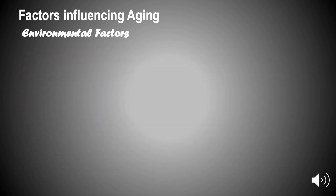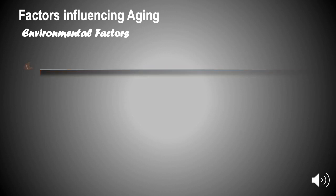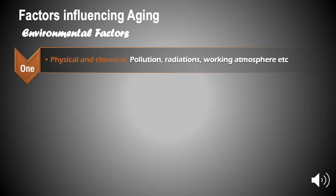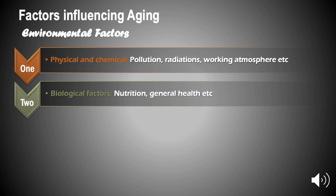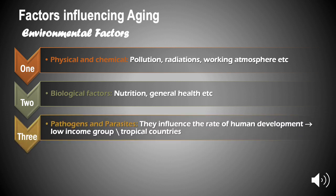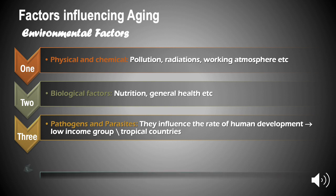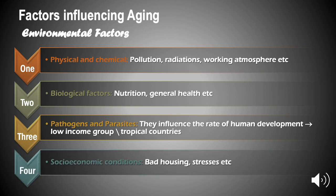Premature aging syndrome: a single gene change results in premature senescence in humans. Example: Werner's syndrome, which means rapid premature aging. Environmental factors — physical and chemical factors such as pollution, radiation, and working atmosphere may reduce life span. Biological factors such as nutrition and general health, pathogens and parasites influence the rate of human development. For example, low-income groups and people living in tropical countries may have a reduced life span.